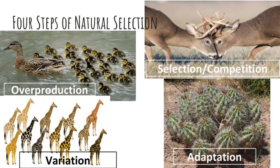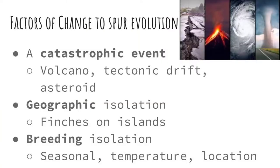A quick summary: we've talked about selection and competition, adaptation to certain environmental characteristics, overproduction or producing many offspring, and variation. Factors that could spur evolution or cause the environment to change include: a catastrophic event like a volcano or tectonic drift, a large asteroid hitting the earth, geographic isolation like the finches on the separate islands, breeding isolation — meaning maybe one species likes to mate when it's hot out and one when it's cold, so they will never intermingle — as well as seasonal and location isolation.